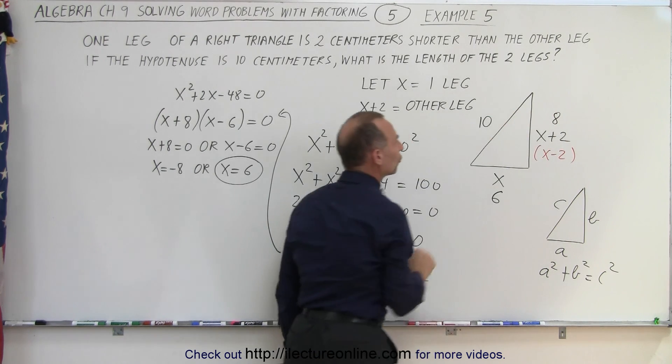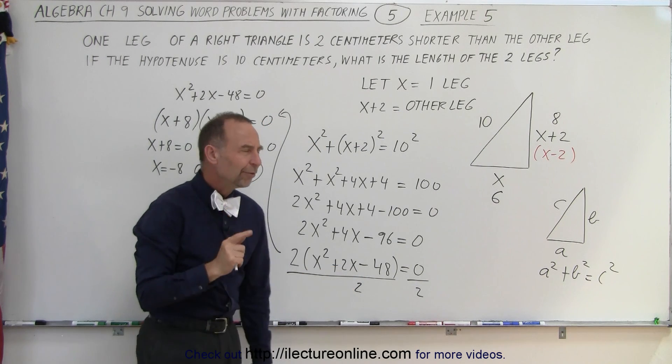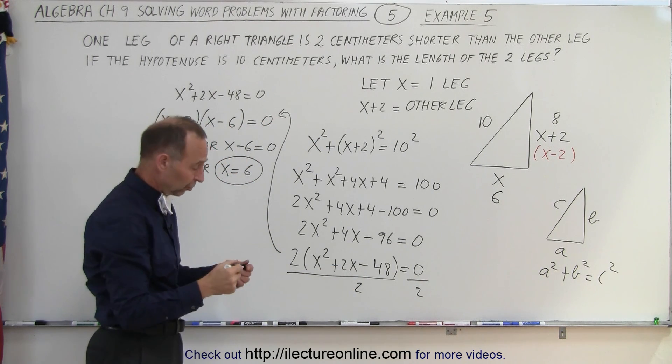So we have a 6, 8, 10 triangle. But what if we had used x minus 2 instead of x plus 2? What would happen?